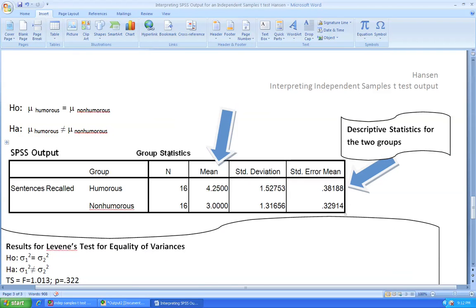When interpreting the results from a statistical test it is always necessary to write the null and alternative hypothesis using statistical notation. In this case the null hypothesis is that the mean of the humorous group equals the mean of the non-humorous group versus the alternative that those two means are not equal. Note that the null and alternative hypotheses both use population parameters in the notation.